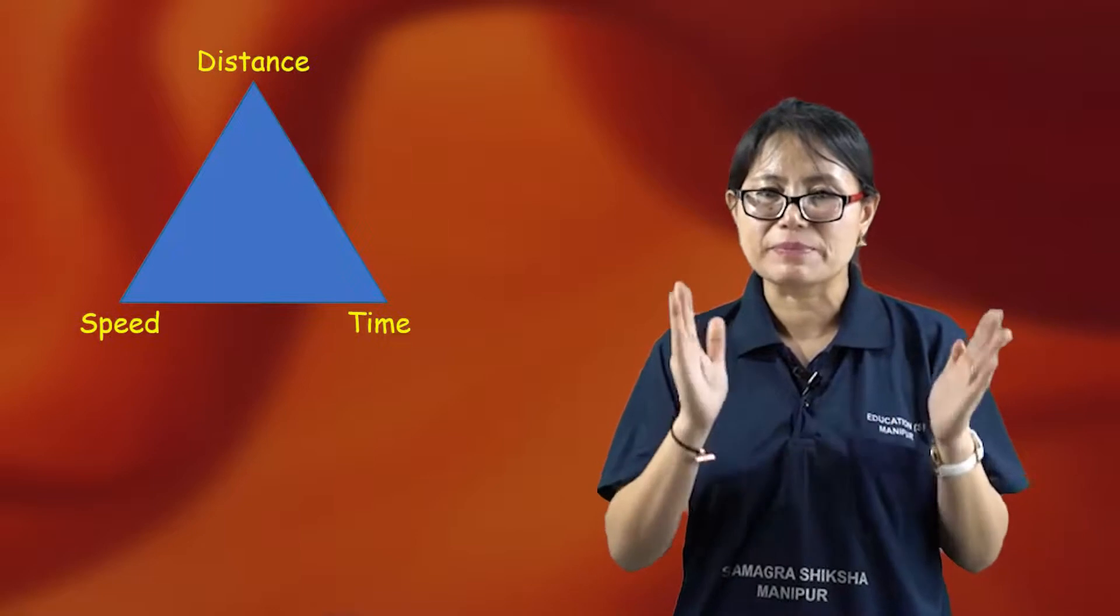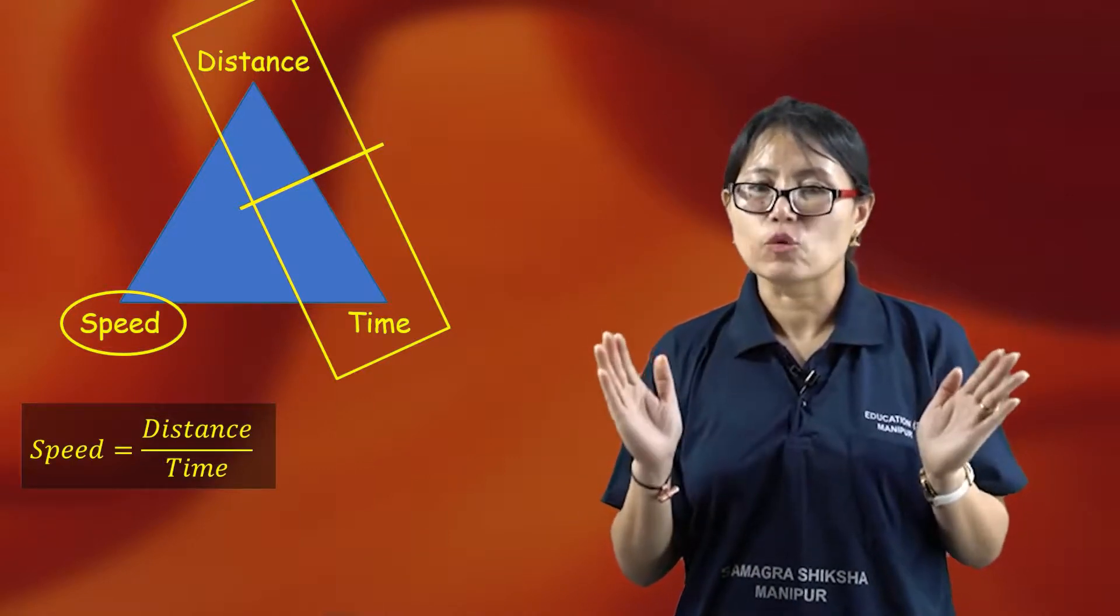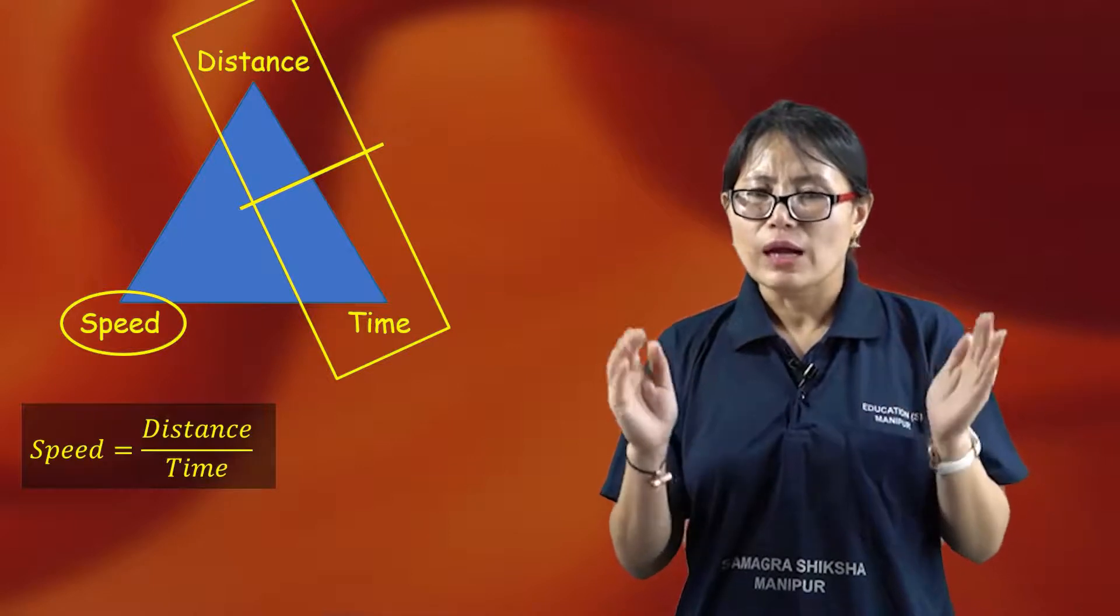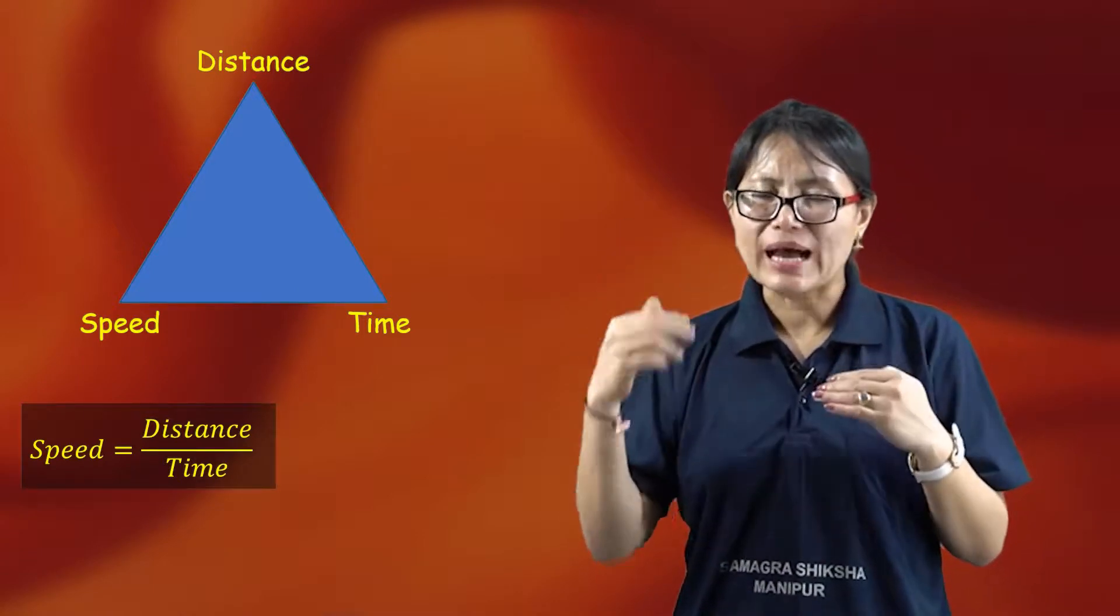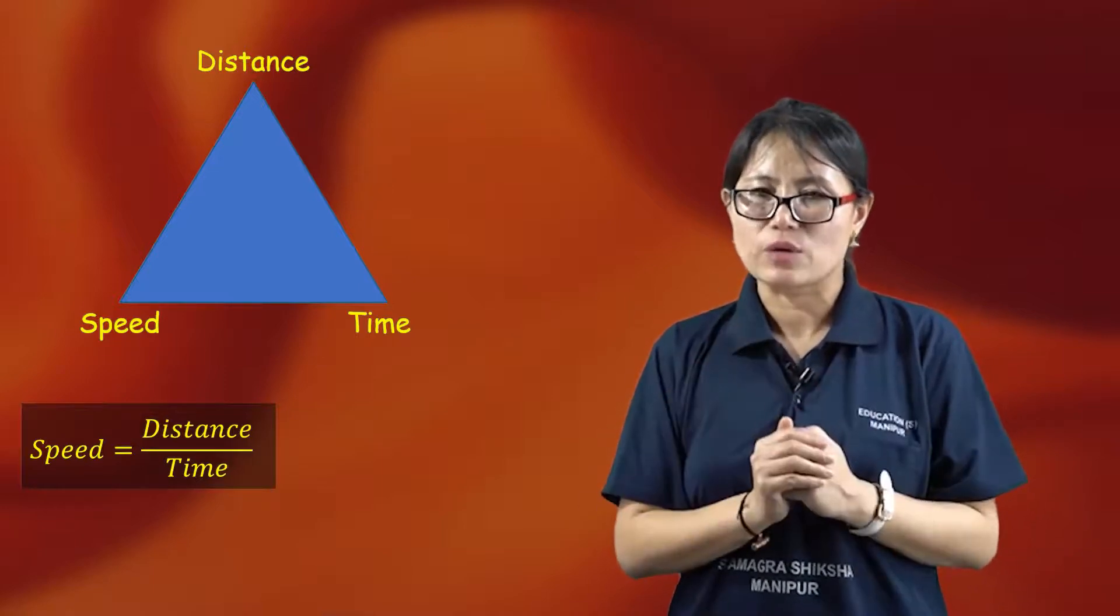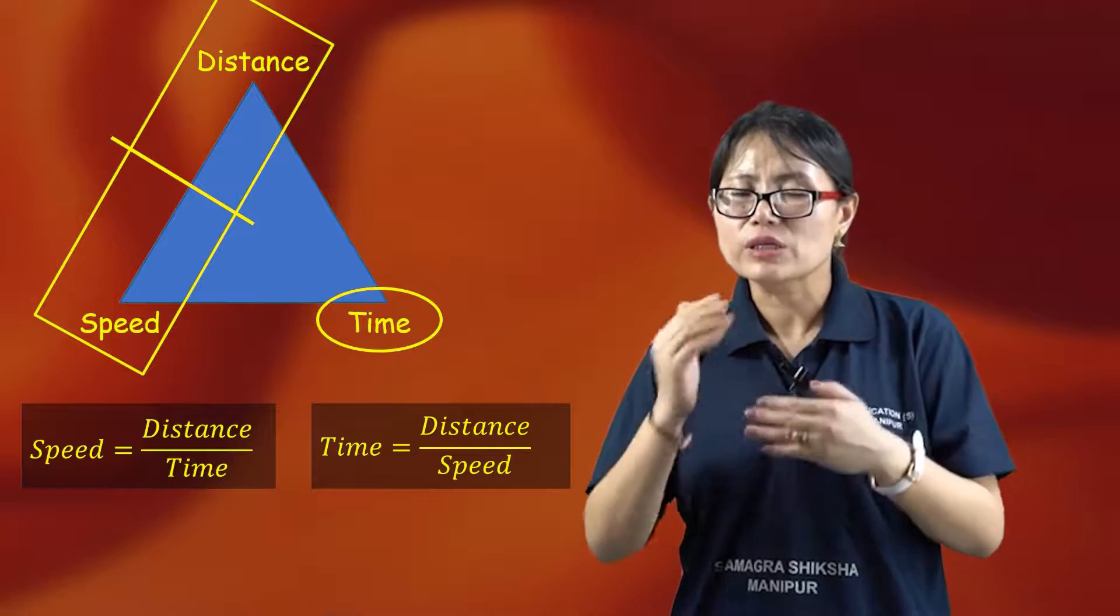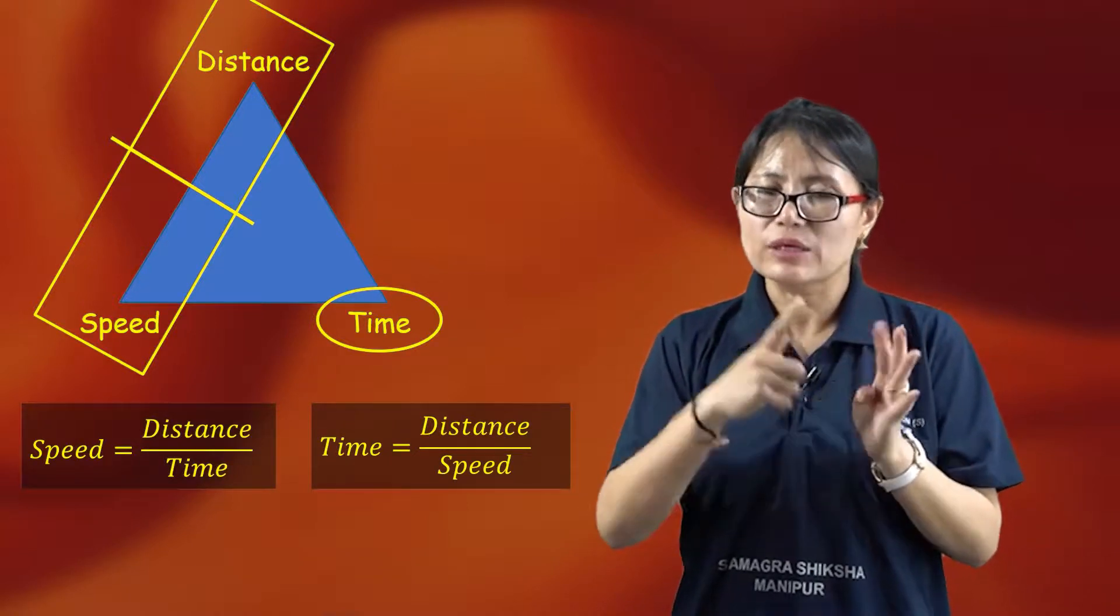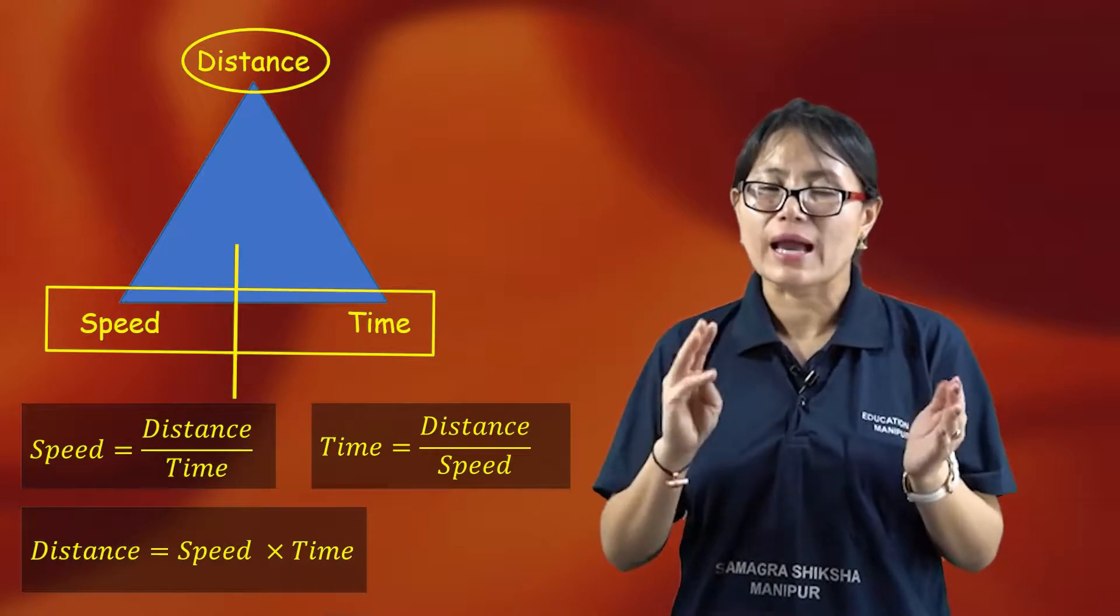The unit of distance is meter. With distance and time, we can calculate speed. The relationship is: speed equals distance divided by time, time equals distance divided by speed, and distance equals speed multiplied by time. These are measurable quantities.